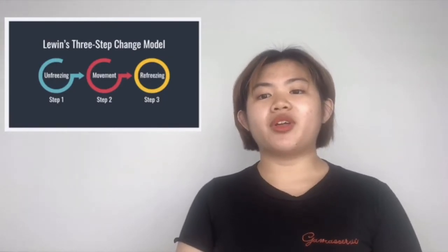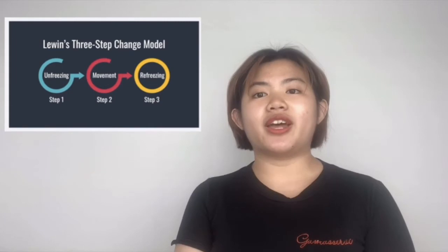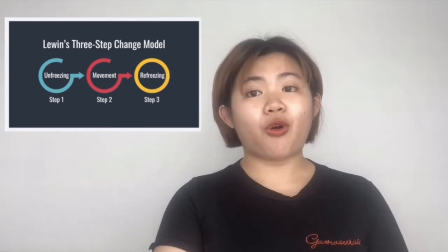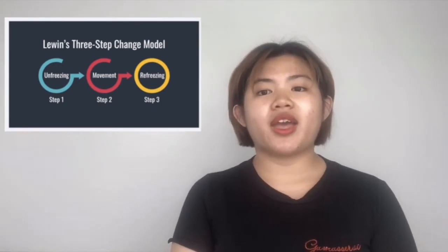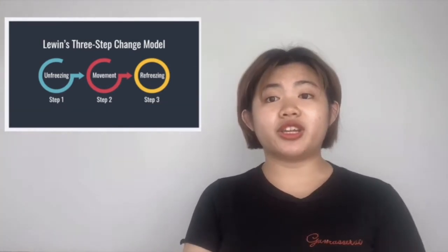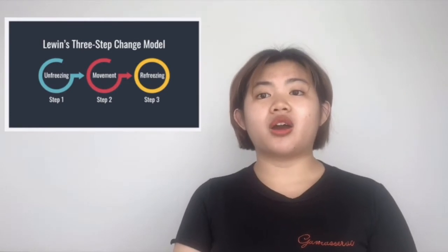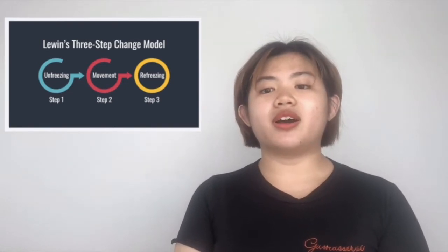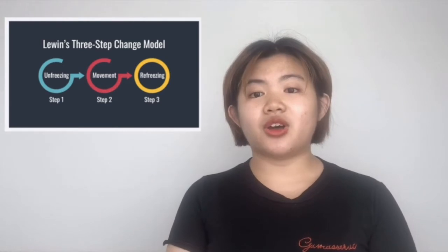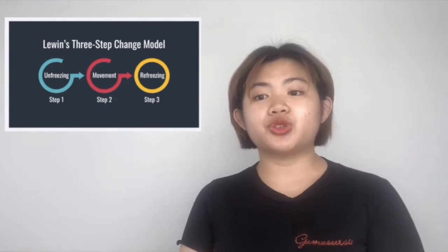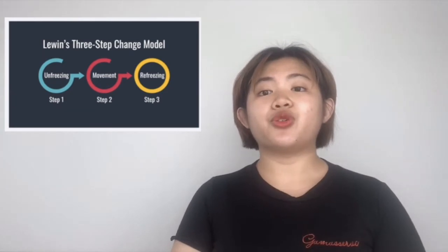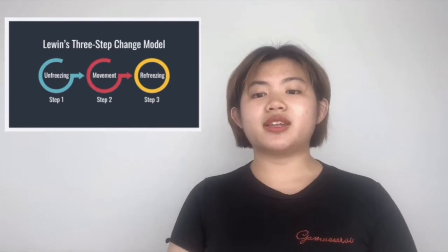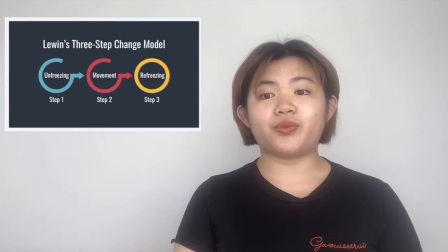Lewin's 3-step model is: you unfreeze, then you move, and then you refreeze — but it's more than that. You have a restraining force and you have a driving force, and the restraining forces are holding you where you are no matter how much you are pushing. So if you can release some of the restraining force, if you can mitigate those so the driving force can push you and move you up to the level that you want to be, and then if you can keep it there, you will refreeze it in the organizational culture over time.